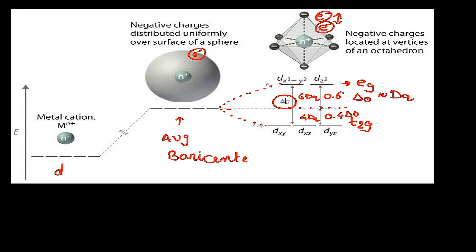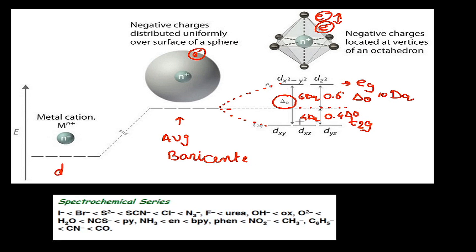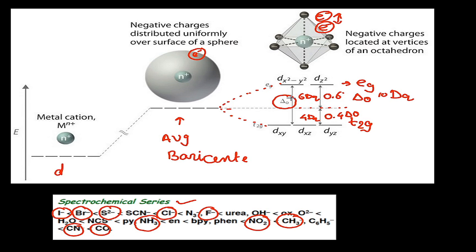Splitting occurs because of the repulsion between the ligand electrons and the d orbital electrons. The magnitude of splitting depends on the strength of the ligand, given by the spectrochemical series. The weakest ligands are the halides: I⁻, Br⁻, Cl⁻, F⁻. Ammonia is a mildly strong ligand. NO₂⁻, CH₃⁻, CO, and CN⁻ are strong ligands. With strong ligands like CN⁻ or CO, the magnitude of splitting is higher; with weak ligands like halides, the magnitude of splitting is lower.